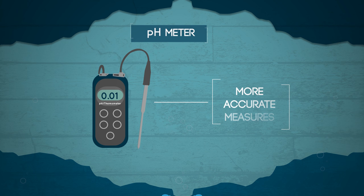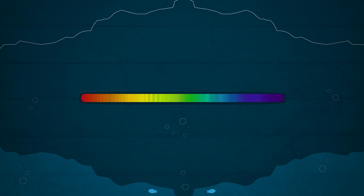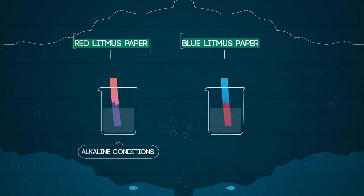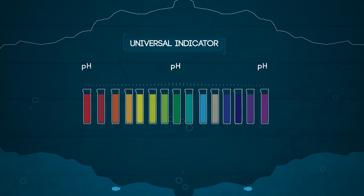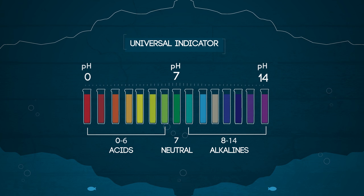So from this lesson you should now know that indicators can tell us whether something is acidic or alkaline and how acidic or alkaline it is. Red litmus paper changes colour for alkalis and blue litmus paper changes colour for acids. Universal indicator can give us more detail, indicating where on the 0 to 14 pH scale a solution is — acids are from 0 to 6, neutral is 7, and alkalis are 8 to 14.